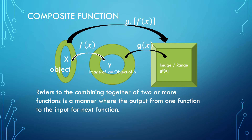we can see very clearly that from set x, mapping to set y through the function f(x). Now the image of f(x) becomes the object of set y. The output of f(x) becomes the input of g(x). Through the function g(x), we obtain the image of Composite Function g of f(x).